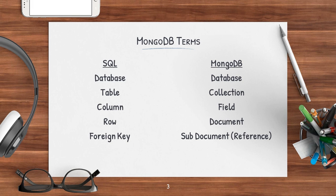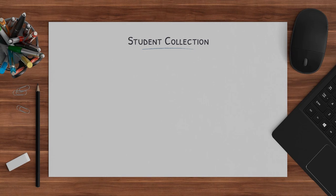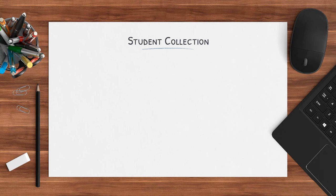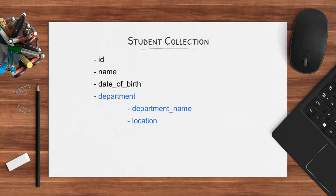Now we have some idea of MongoDB terms. Let's look at the student collection and one document. It will have an id field, name, date of birth, and department. Here department is a separate document — a document inside a document, which is a sub-document. So department is a sub-document which has its own set of fields and values. We can have sub-document without reference and sub-document with reference, both covered later in the course. I've highlighted it with a different color.